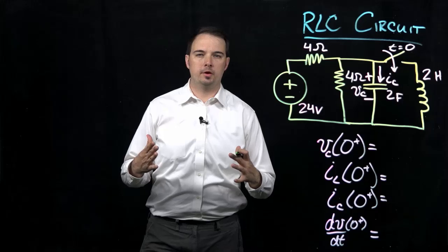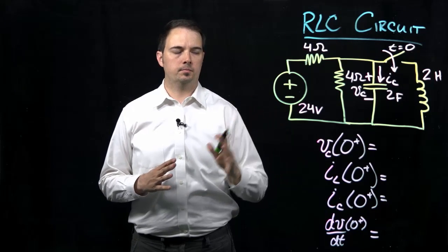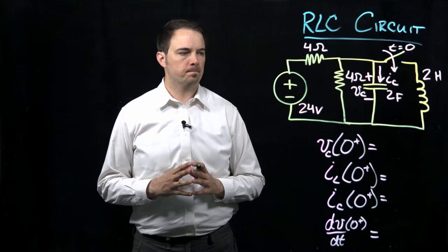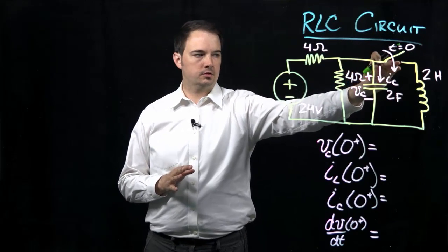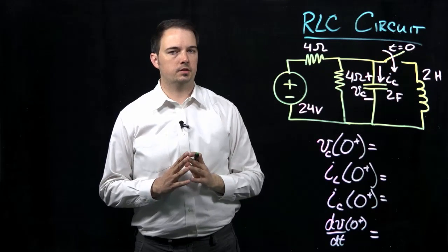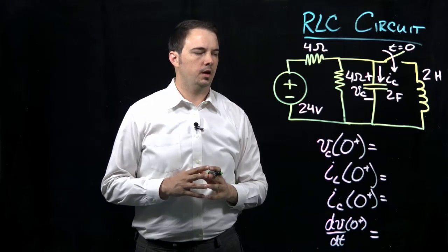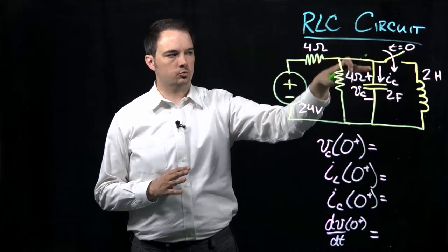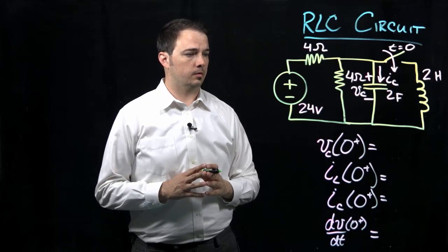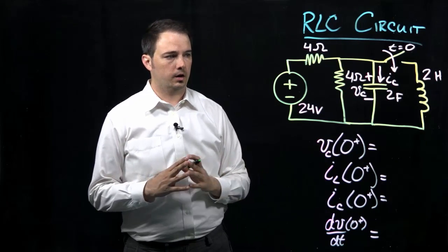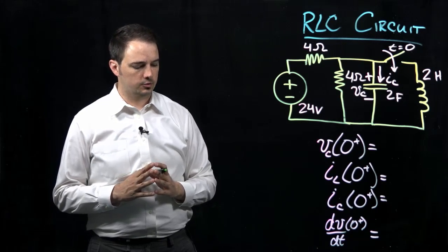Hi, I'm Dr. Kyle Montgomery, and in this video I'll be working through a problem that involves an RLC circuit — basically a parallel combination of those elements. In this problem, initially there's a switch that is open, so the inductor is initially disconnected. There's a voltage source providing current to the left of the circuit. At time t equals 0, I'm going to close that switch, thereby connecting the inductor, and then evaluating what's going to happen with the voltages and currents in the circuit.